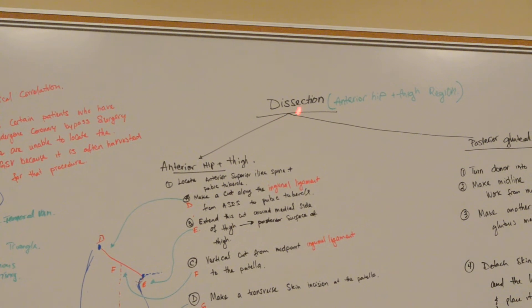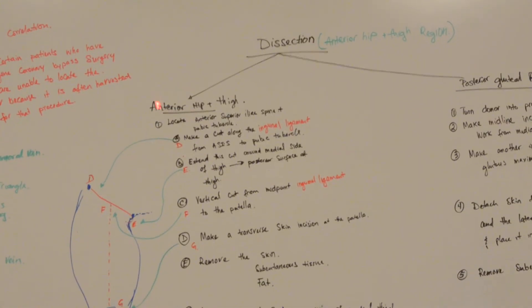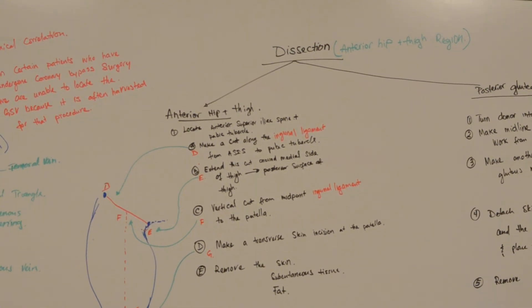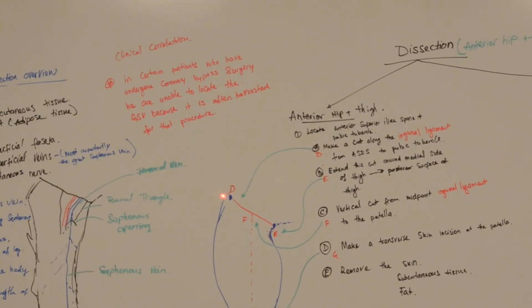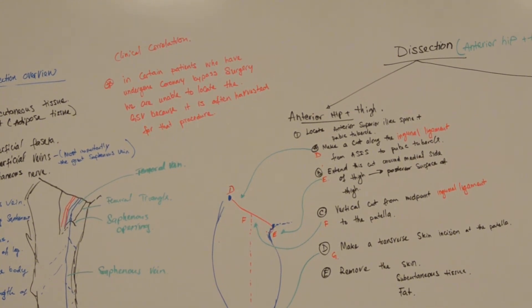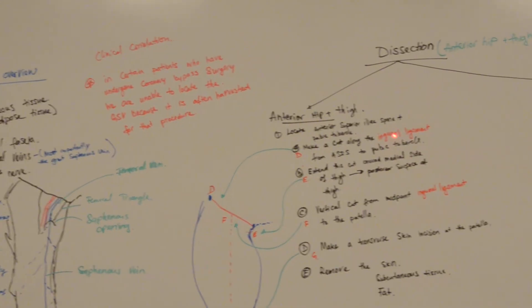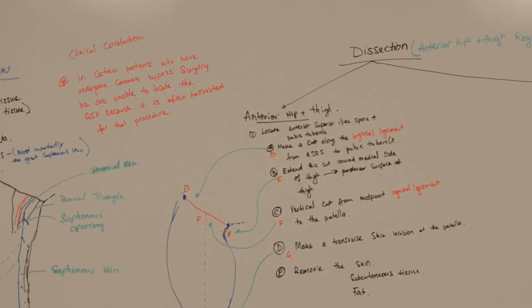For the dissections of the anterior hip, thigh, and posterior gluteal regions: first, for the anterior hip and thigh, we want to locate the anterior superior iliac spine and the pubic tubercle. Connecting those two is the inguinal ligament. We want to make a cut along the inguinal ligament from the anterior superior iliac spine to the pubic tubercle, and then extend this cut around the medial side of the thigh to the posterior surface.